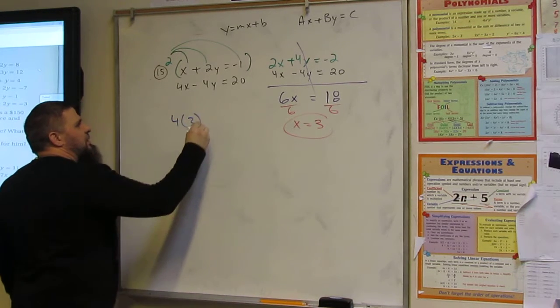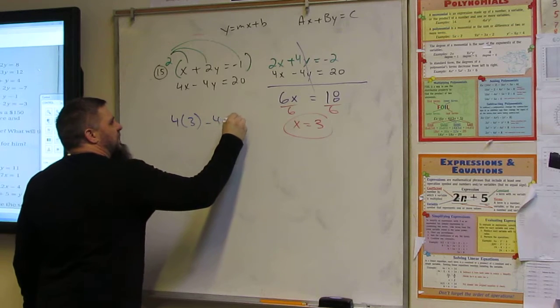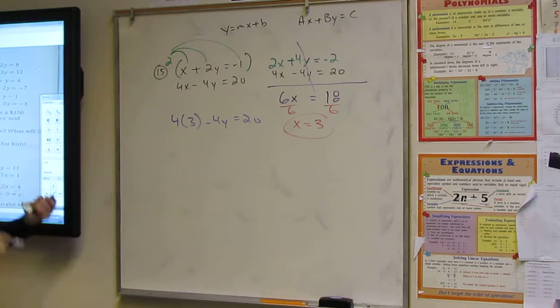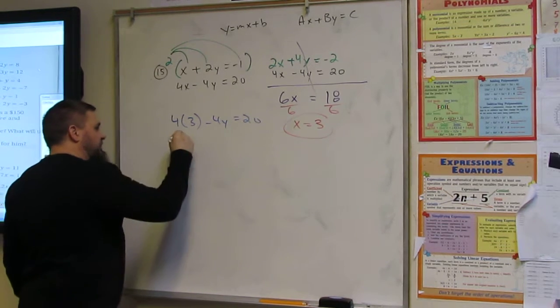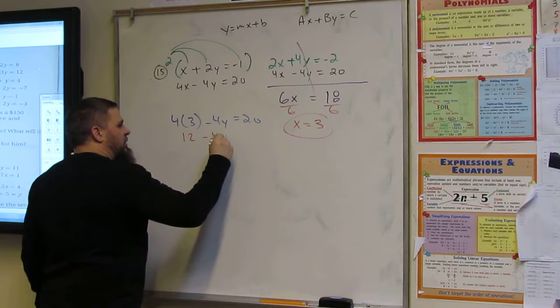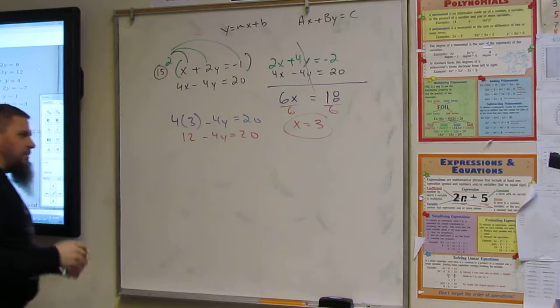So four times three minus four times Y is equal to 20. All right. What do we do? Four times three is what? Twelve. Twelve minus four Y equals 20.